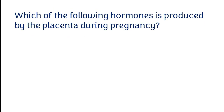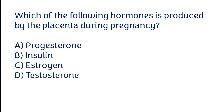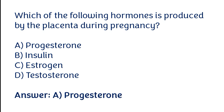Which hormone is produced by the placenta during pregnancy? Progesterone, insulin, estrogen, or testosterone. The correct answer is option A — progesterone is the hormone produced by the placenta during pregnancy.